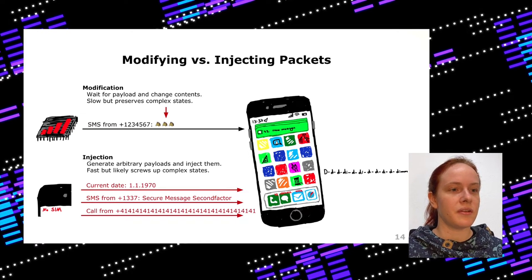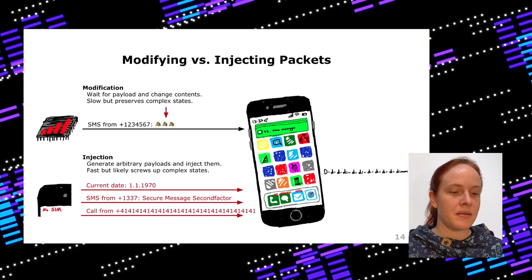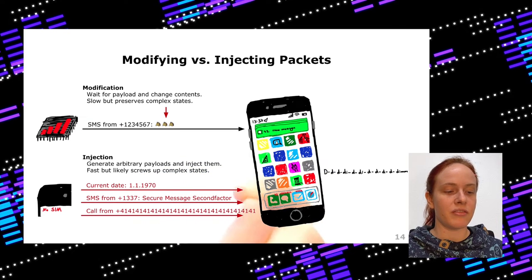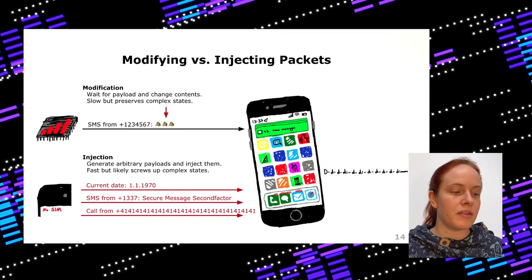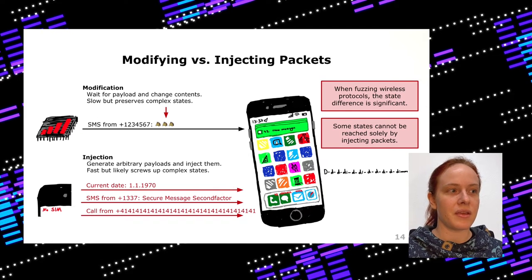Something more efficient is injection: you observe certain messages and then just send them again, without needing a second phone. You can send a lot of data very fast — this is the effect when your iPhone goes dim from all the notifications. The issue is that this does not preserve state, so there might be actions where the iPhone requests something that is then answered. To summarize: if you fuzz a wireless protocol you can have very significant state differences, and just injecting packets cannot reach all states.